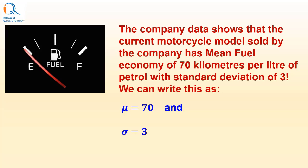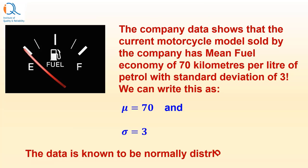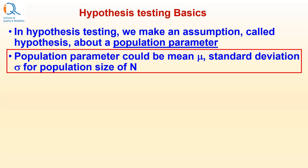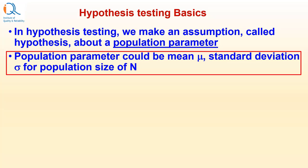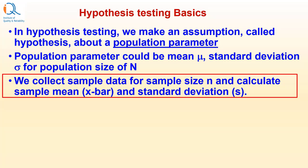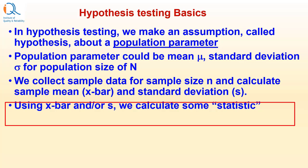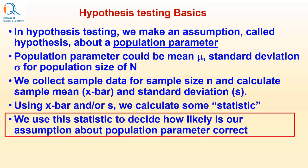Remember, mu and sigma are population parameters based on historical data. The data is known to be normally distributed. In hypothesis testing, we make an assumption called a hypothesis about a population parameter. Population parameter could be mean mu, standard deviation sigma, or even median, for a population of size N. We collect sample data of sample size n, calculate sample mean x-bar and standard deviation s. Using x-bar and/or s, we calculate some statistic, which we use to decide how likely our assumption about the population parameter is correct.